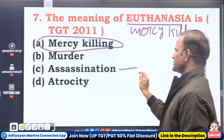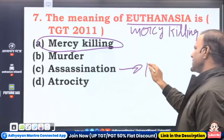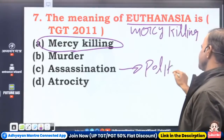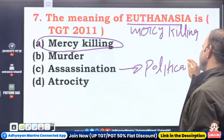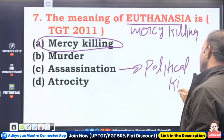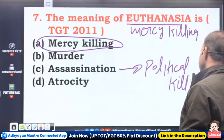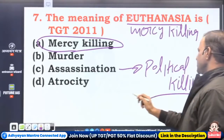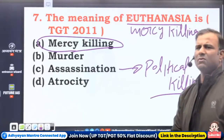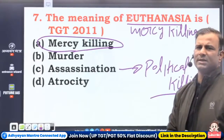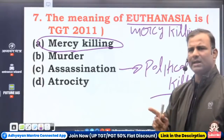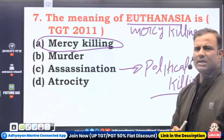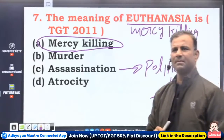Assassination means political killing. Indira Gandhi was assassinated; Rajiv Gandhi was assassinated — these are not called murder, they are called assassination. Keep this in mind. Atrocity means cruelty. Euthanasia is allowed in New Zealand.